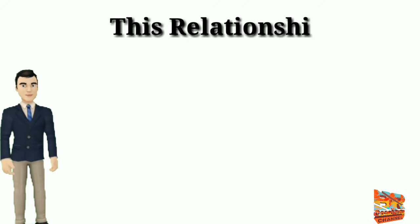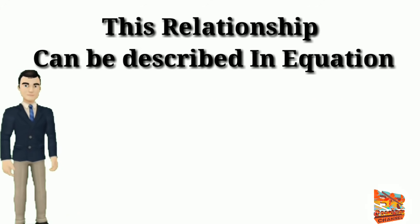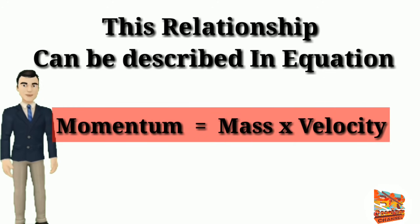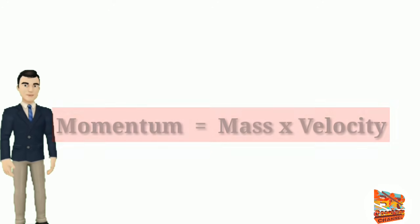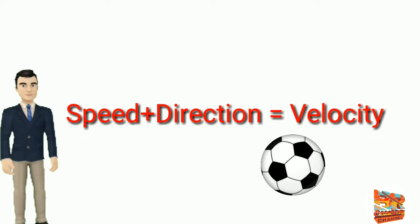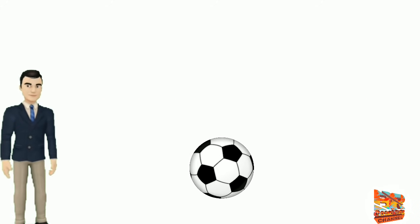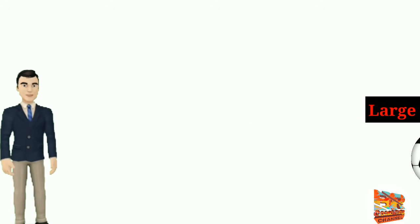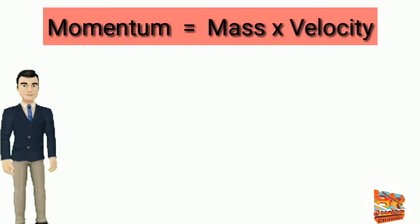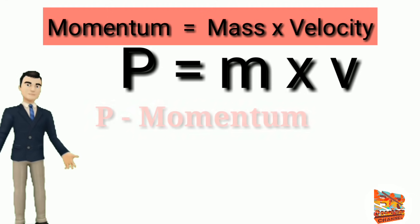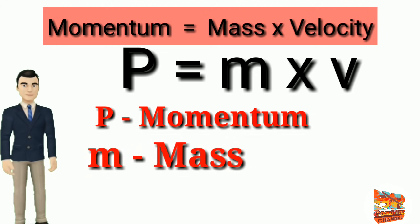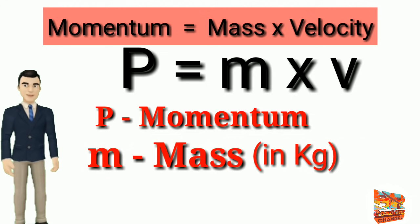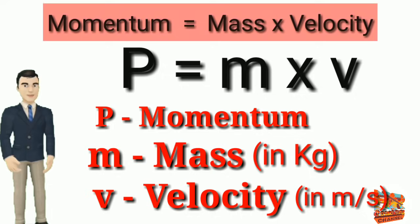This relationship can be described in an equation. Momentum equals mass times velocity. You may remember that velocity is speed with direction. So if an object has a large speed, it also has a large velocity. Our momentum equation can be simplified even more by substituting the words for symbols: p equals mv, where p is momentum, m is mass in kilograms, and v is velocity in meters per second.